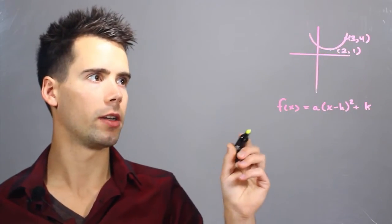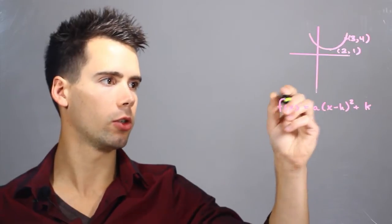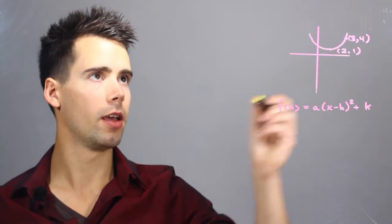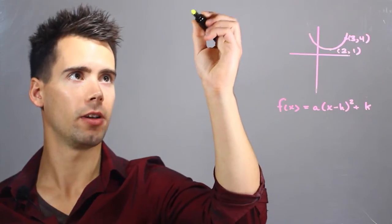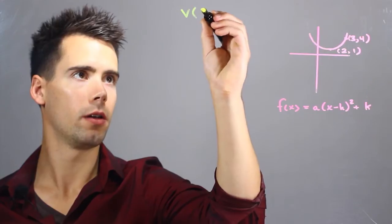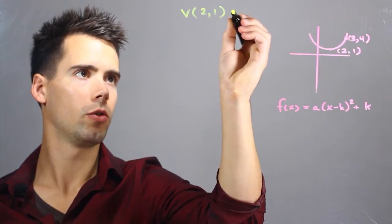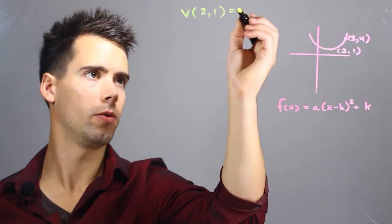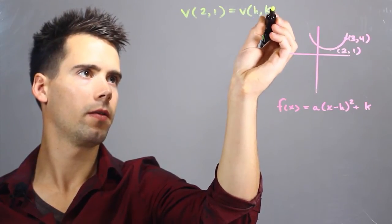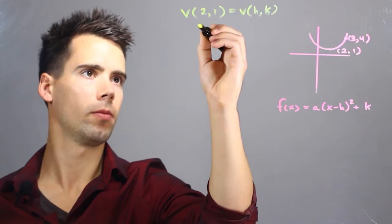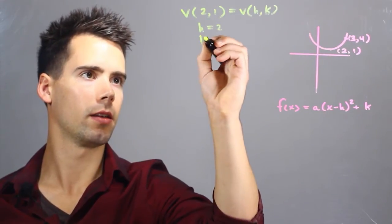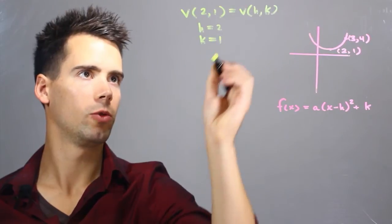So the first thing we can do is write down what each variable in this equation is and how it relates to these points. Now the vertex is actually defined by v(2,1) which is equal to v(h,k). So in this case h is equal to 2 and k equals 1.